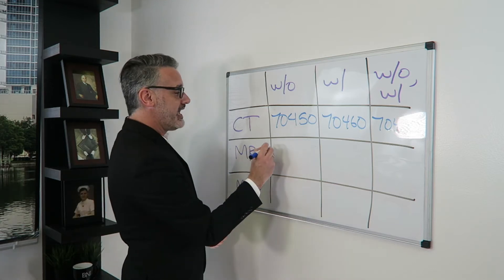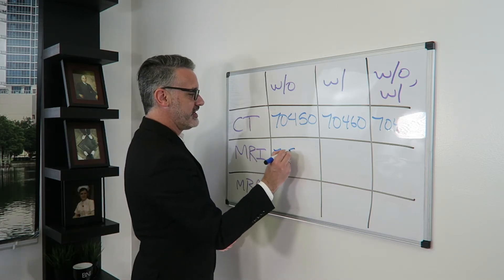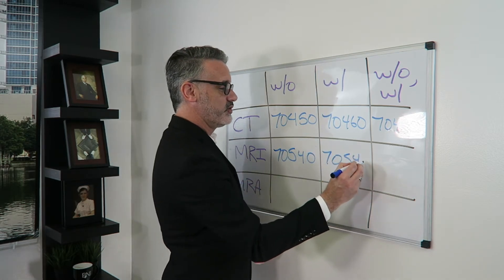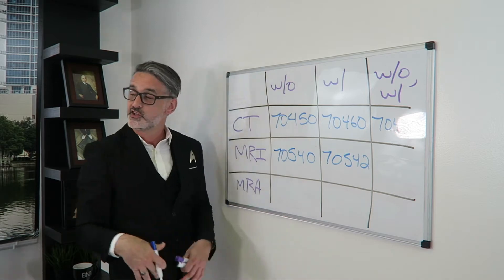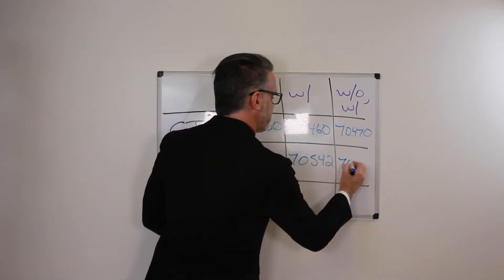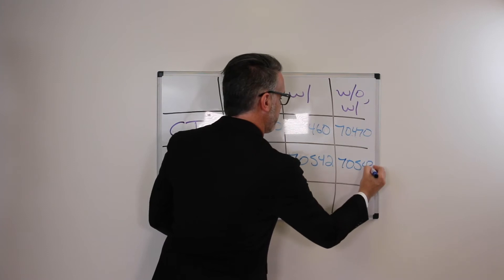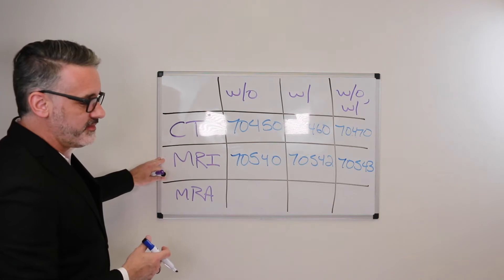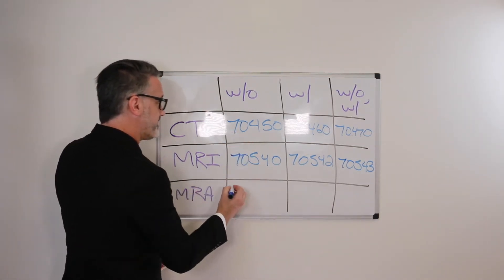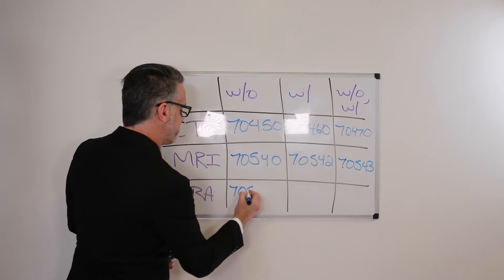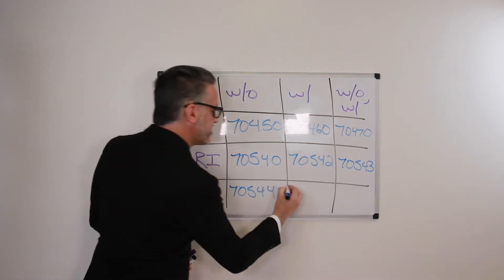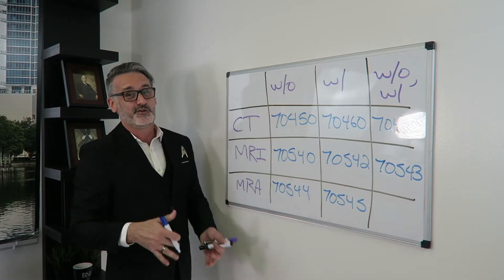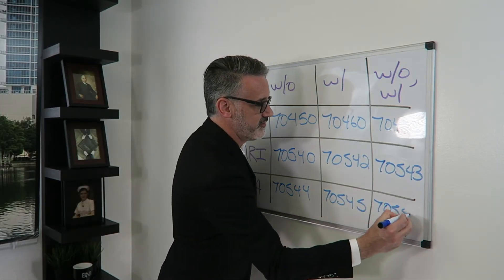Now, with the MRI, same format, where we have one code for without contrast, 70540. One code with contrast, 70542. And the combination without contrast, followed by with, 70543. And then we have the MRA, same principle as the CT and the MRI. We have an MRA example for the head, without contrast, 70544. With contrast, 70545. And then without, followed by with, 70546.